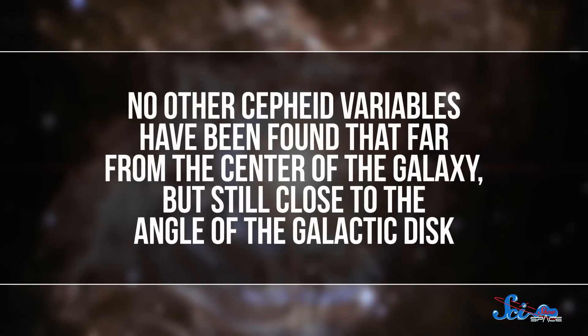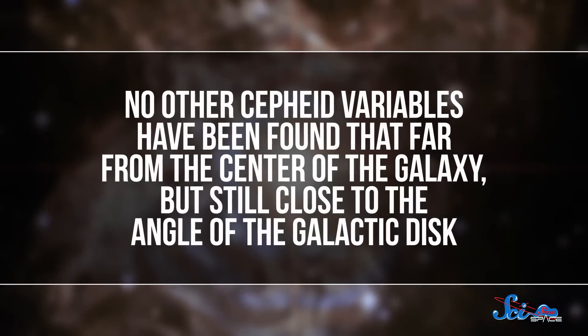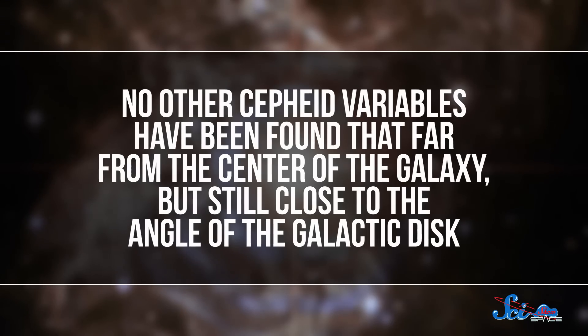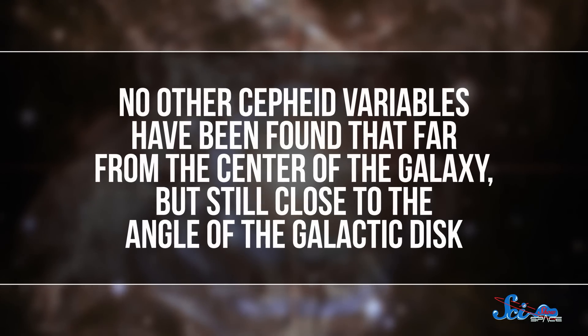All four of the stars were about 300,000 light years from the center of the galaxy, and at about roughly the same angle as the rest of the galactic disk — just about where Galaxy X was predicted to be. Of course, these stars could still be part of our own galaxy. But that would be weird, because no other Cepheid variables have been found that far from the center of the galaxy, but still close to the angle of the galactic disk. And the researchers found four clustered together.